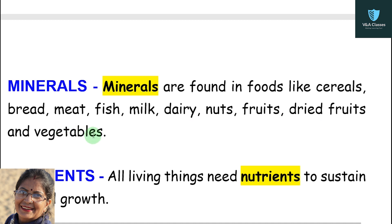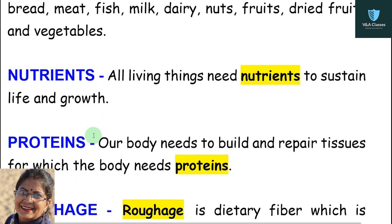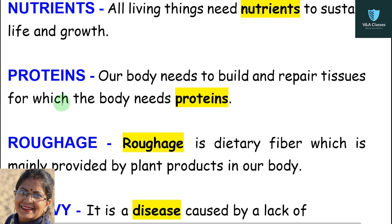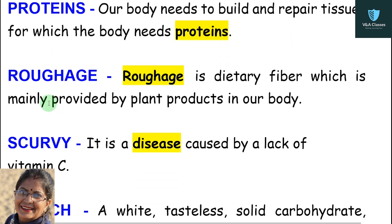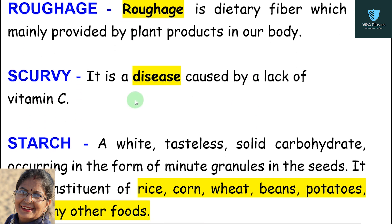Next — minerals: minerals are found in foods like cereals, bread, meat, fish, milk, dairy, nuts, fruits, dried fruits, and vegetables. Next — nutrients: all living things need nutrients to sustain life and growth. Next — proteins: our body needs to build and repair tissues, for which the body needs proteins. Next — roughage: roughage is a dietary fiber which is mainly provided by plant products.